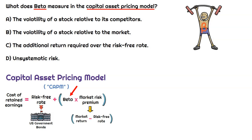We multiply the beta by the market risk premium. The market risk premium is independent of a company — it's the market return minus the risk-free rate. But then we multiply it by the beta, which is specific to a company, to calculate the company's market risk premium. So based on the risk profile of this company, we now understand the overall increase in required return. The beta is a critical component of the capital asset pricing model.